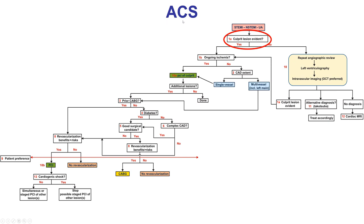In patients who present with acute coronary syndromes who have a culprit lesion with ongoing ischemia — the classic example being ST-segment elevation myocardial infarction — immediate ad hoc PCI is indicated. Similarly, for non-ST elevation ACS patients, angiography and PCI is indicated early on.